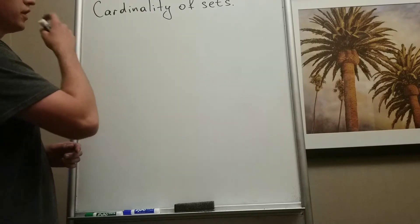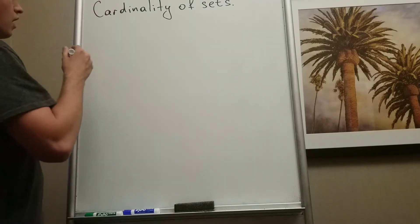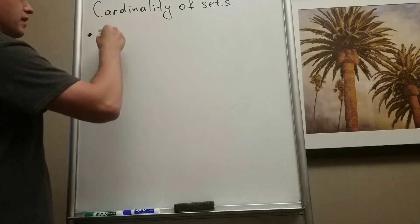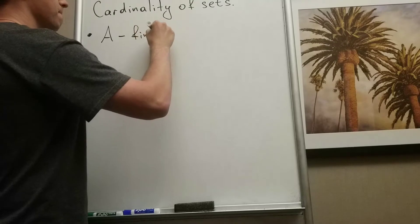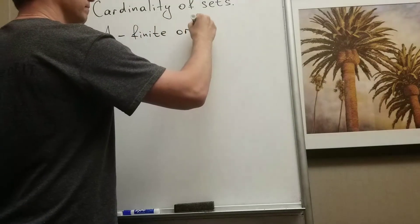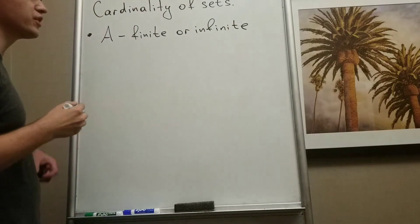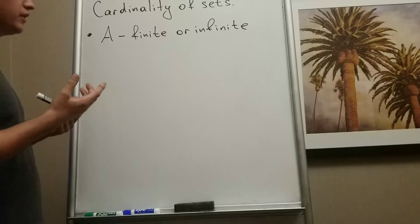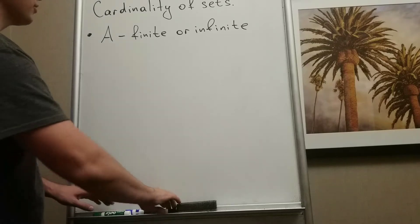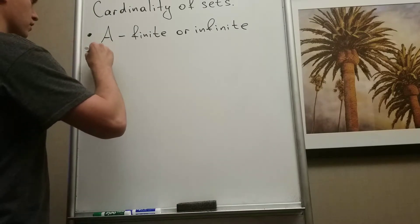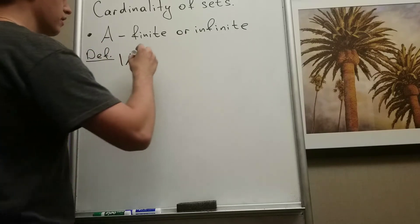In this video I want to show the definition of cardinality of sets. If we have any set A, this set can be either finite or infinite, and for finite and infinite we have different types of cardinality. The finite case is going to be really easy in terms of cardinality, so let me give you a definition.